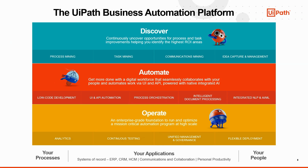The UiPath Business Automation Platform offers a complete solution for your business operations. The discovery layer monitors systems like Oracle, SAP, and emails, identifying automation opportunities. Efficient automation is achieved through the automation layer, combining API integration and UI emulation, integrating AI and ML models and intelligent document processing. On the operation side, the platform is an enterprise-grade foundation to run and optimize the automation program at high scale.